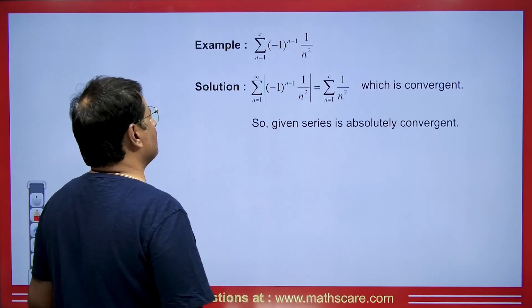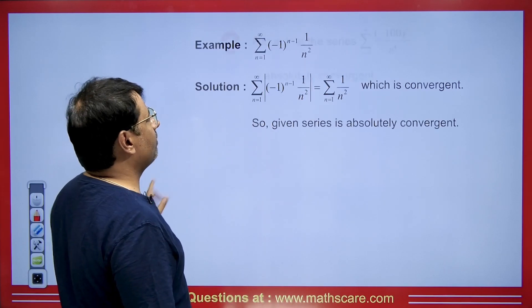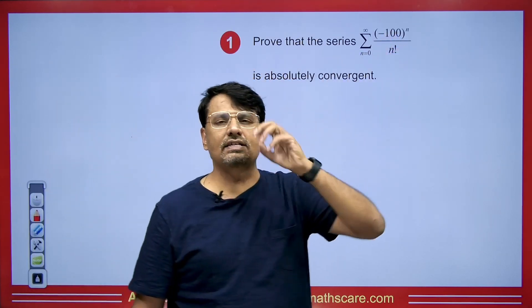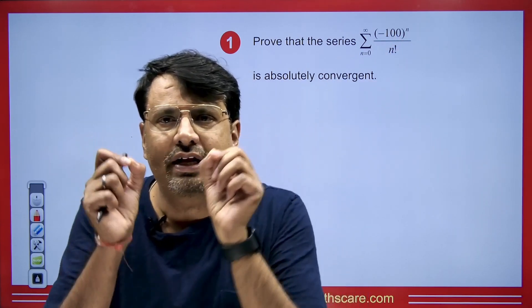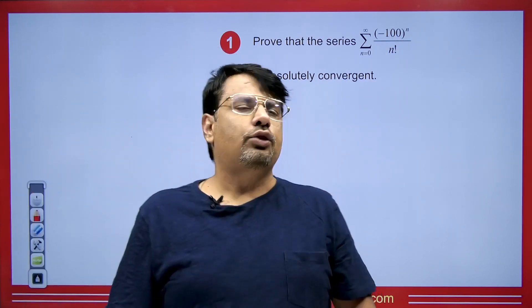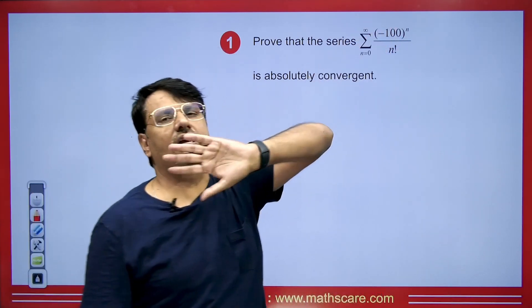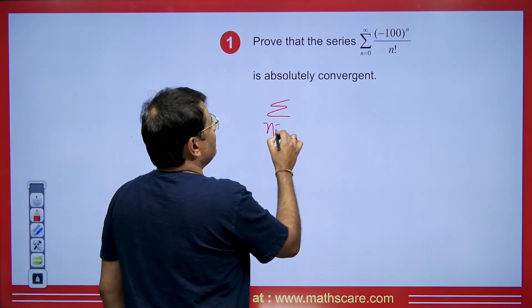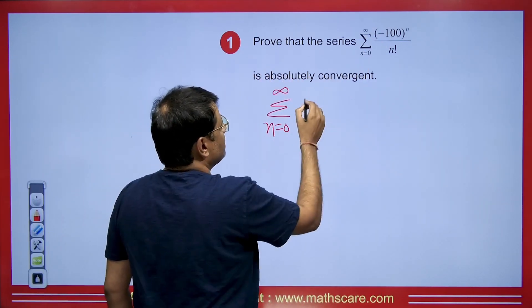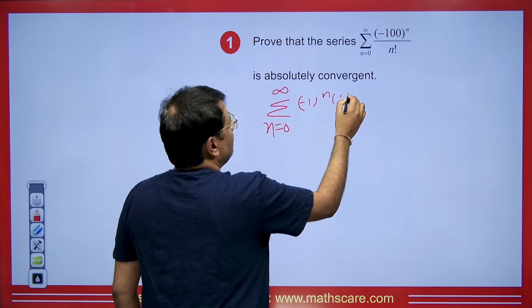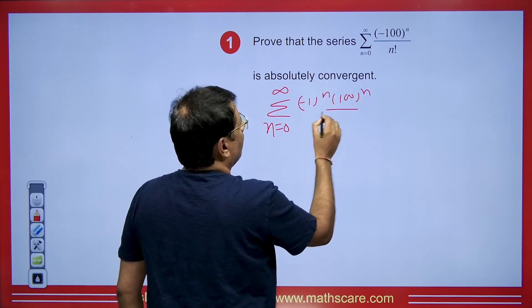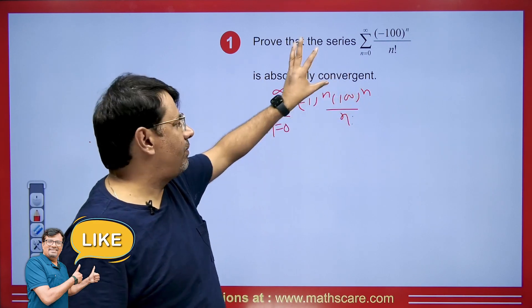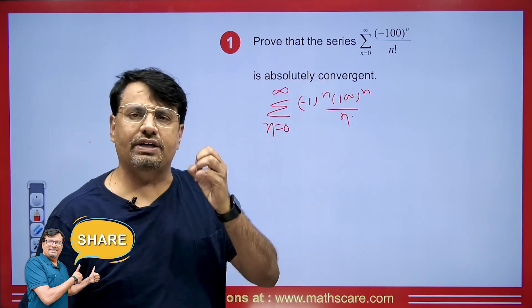Now, how do you do this in an exam? Let's look at another example. Suppose the question asks you to prove that a series is absolutely convergent or not. When proving absolute convergence, we don't need to check the convergence of the original series separately. Consider the series from n = 0 to infinity. Taking −1 as common, we have (−1)^n times 100^n / n!. This is an alternating series, and we need to prove whether it is absolutely convergent.